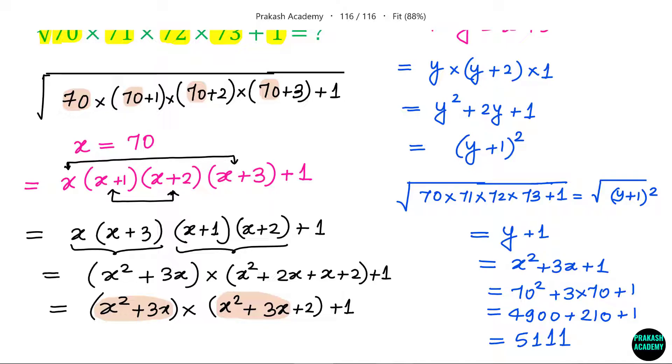The final answer for this calculation is 5111. In this case, I have not used any calculator. Simply by converting into perfect square, I can calculate the square root. I hope you enjoyed this video. If you enjoyed please share with your friends, like this video and subscribe to my channel. Thanks for watching and I will see you in the next video.